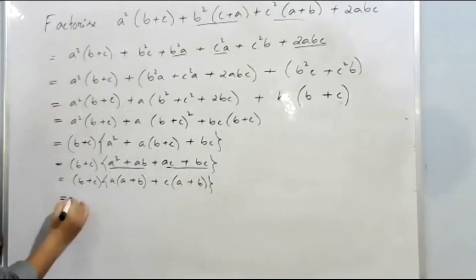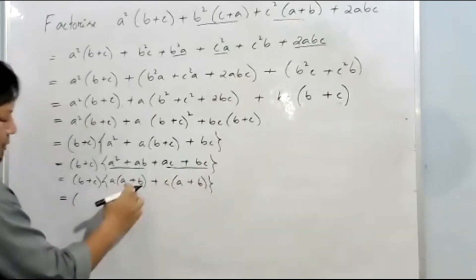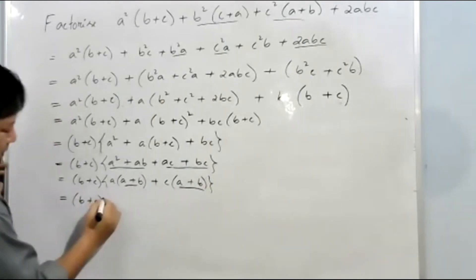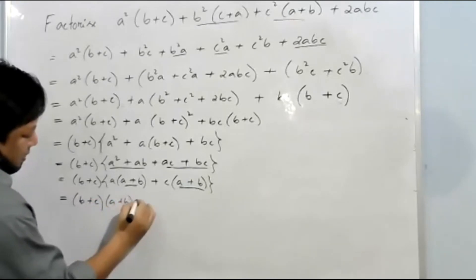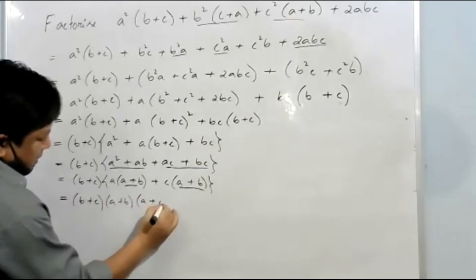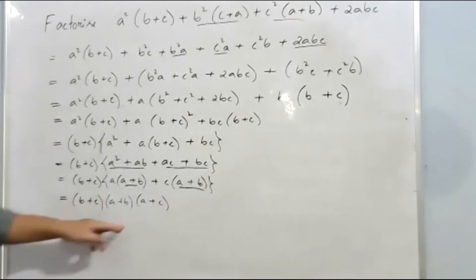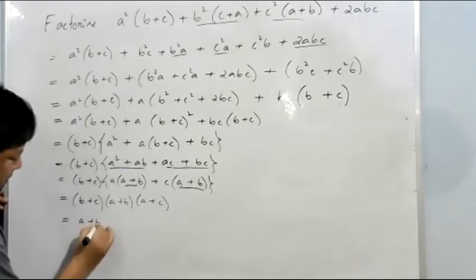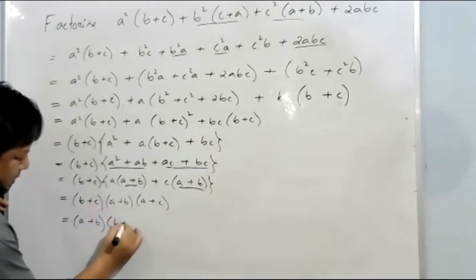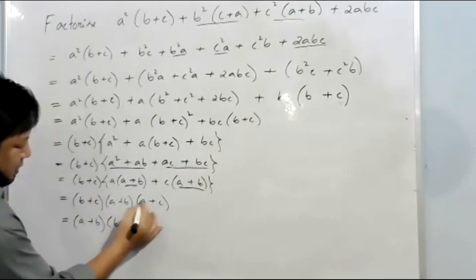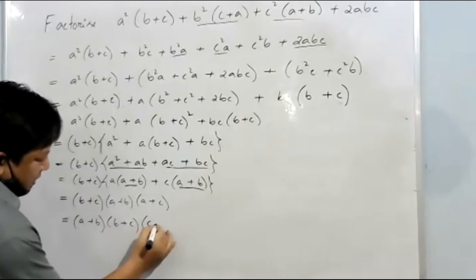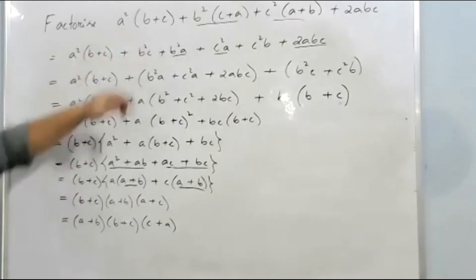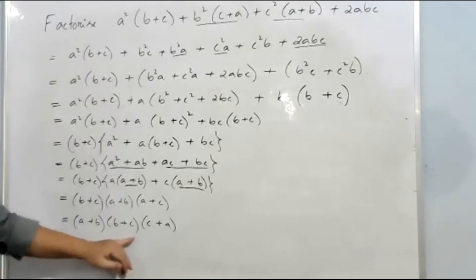Let's take out (a + b) as common again. Taking (b + c) out, with (a + b) common inside, the remainder will be (a + c). Now rearranging in alphabet order: (a + b), (b + c). Since both are positive we can write the last factor as (c + a). So from this polynomial, the factors are (a + b), (b + c), (c + a).